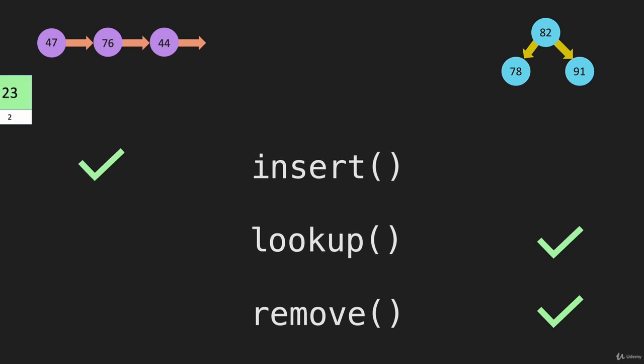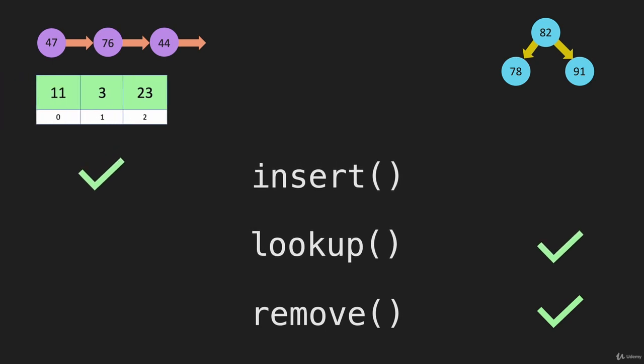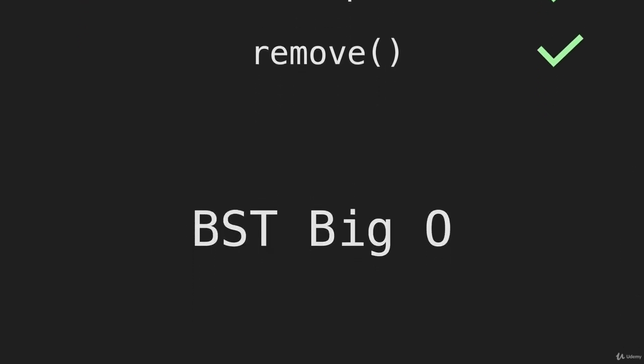And the same goes for an array. Because an array, it's O of 1 to add something. But if you're going to look up by value, that is going to be O of N, just like a linked list. Okay, so that is our overview of binary search tree, big O.